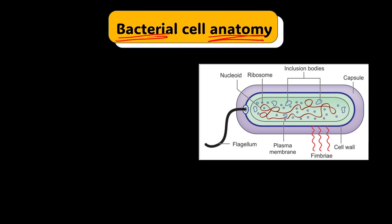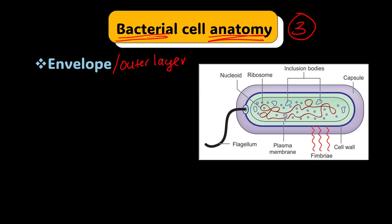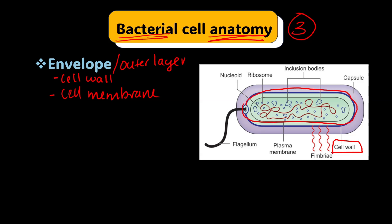When dealing with the morphology or anatomy of bacteria, there are three important things to pay attention to. The first is the outer layer, also referred to as the envelope. Two structures contribute to the envelope: the cell wall, which is the rigid structure on the outside, and beneath it, the cell membrane, also referred to as the plasma membrane.